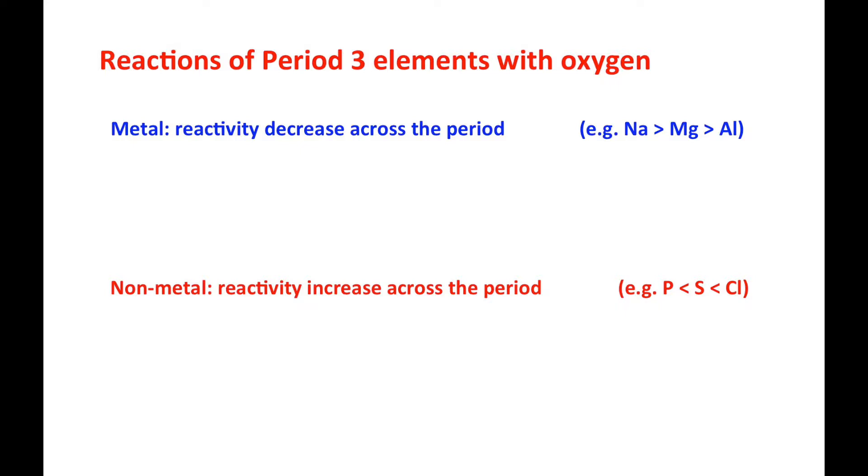That means group 7 will have the highest reactivity. The reason is that for metals, when they move across a period, the difficulty in losing the outermost shell electrons also increases.